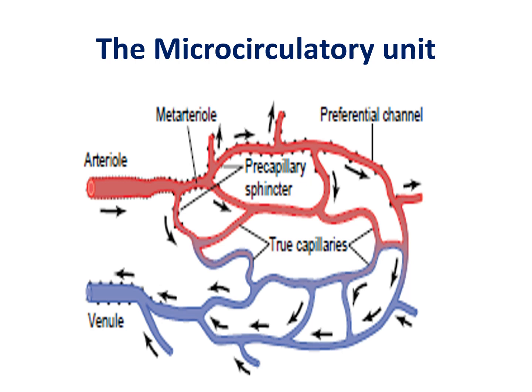To start with, we have to know that the microcirculation goes through the microcirculatory unit. The microcirculatory unit is formed of arterioles, metarterioles, a capillary bed, and venules.